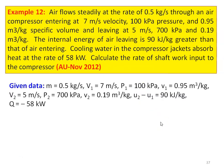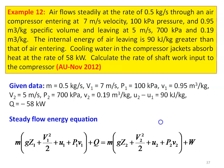Write down the given data: m equal to 0.5 kilograms per second, velocity V1 equal to 7 meters per second, pressure P1 equal to 100 kilopascal, specific volume v1 equal to 0.95 meter cube per kilogram, velocity V2 at outlet equal to 5 meters per second, pressure at outlet P2 equal to 700 kilopascal, specific volume at outlet v2 equal to 0.19 meter cube per kilogram. Change in internal energy U2 minus U1 equal to 90 kilojoules per kilogram, and the amount of heat transfer is minus 58 kilowatts because it is cooling of the compressor.